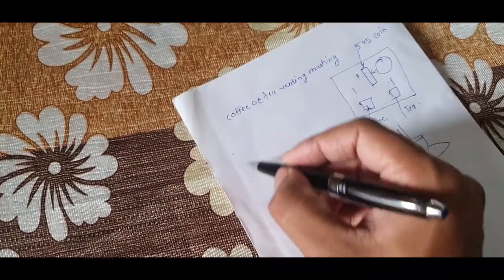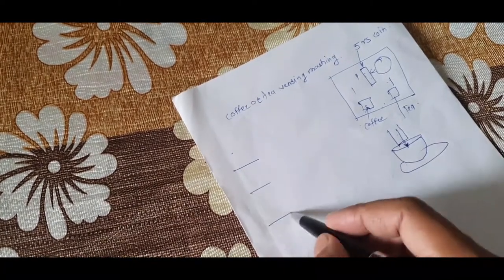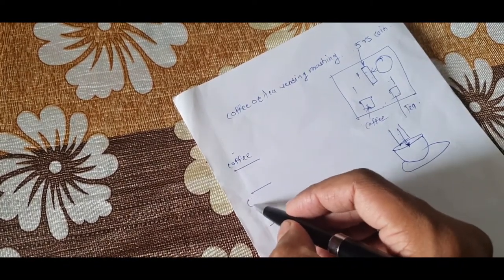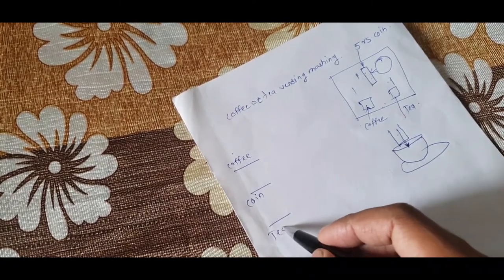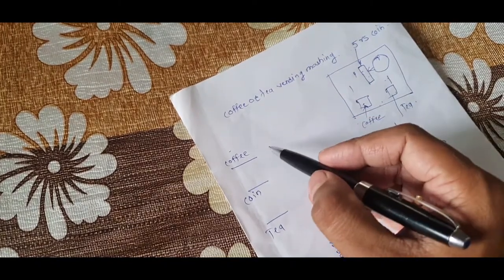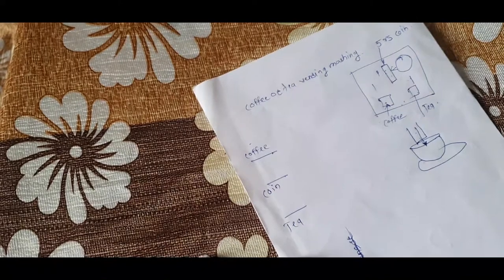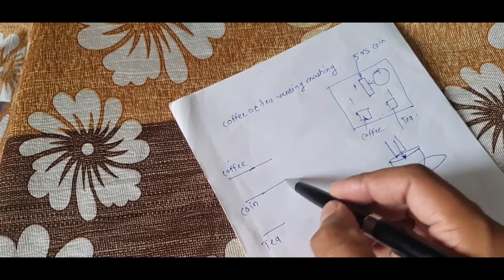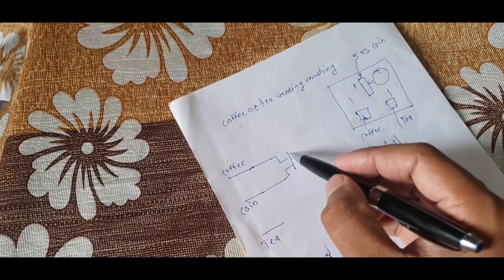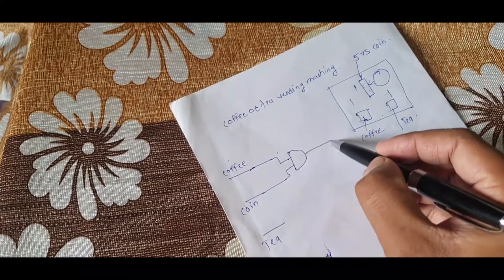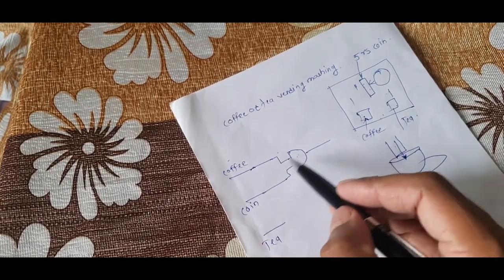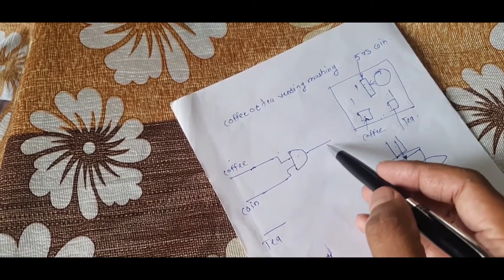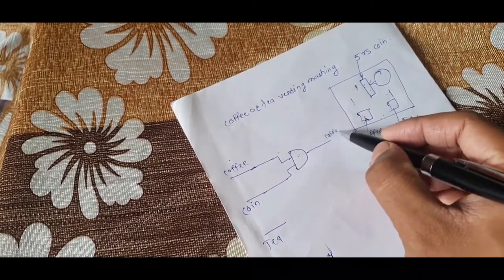There are three inputs: first is coffee, second is the coin input, and third is tea. If the coffee button is pressed and the coin is entered, then the machine should deliver coffee. For this we will use an AND gate. When the AND gate receives coffee=1 and coin=1, coffee will be dispensed.